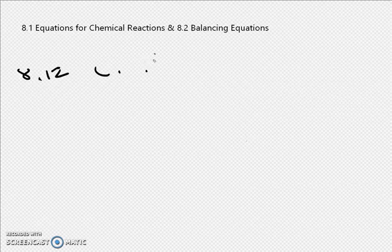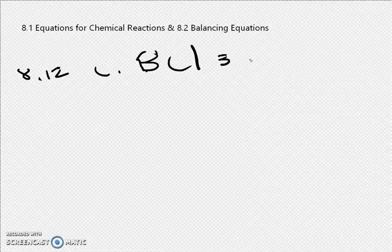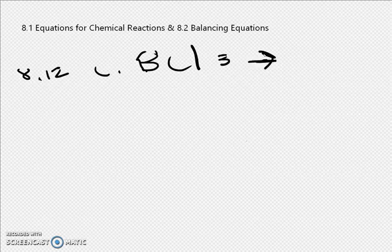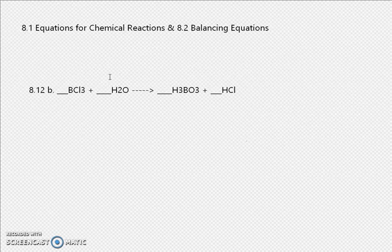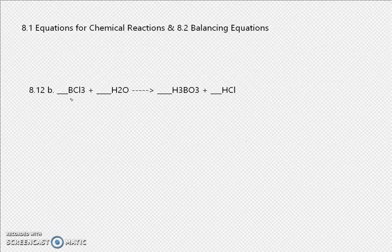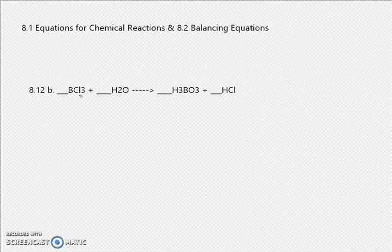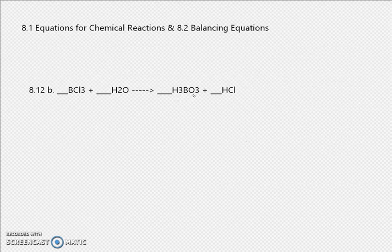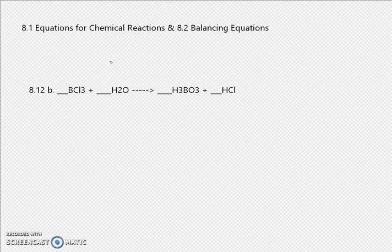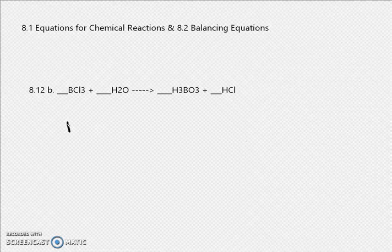Let's do section 8.12, part C. We have BCl3 plus H2O on one side. Let's make a table since it'll be easier. The columns are B, Cl, H, and O. On the left side we have 1 B, 3 Cl, 2 H, and 1 O. On the right side we have 1 B, 1 H, and 1 Cl.